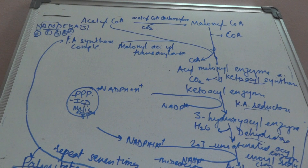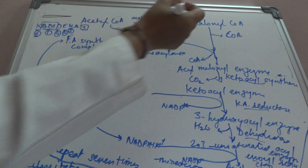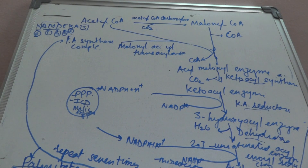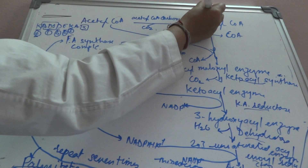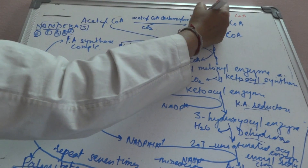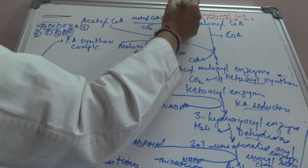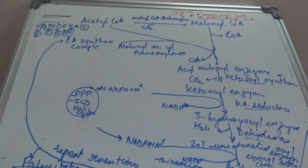The regulation of fatty acid synthesis is primarily through acetyl-CoA carboxylase. It is inhibited by malonyl-CoA and palmitoyl-CoA, and is stimulated by citrate. It is also stimulated by insulin, which keeps the enzyme in its dephosphorylated (active) state.